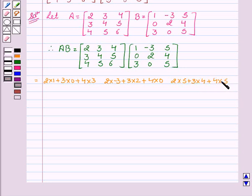Similarly, for the second row, we get 3 into 1 plus 4 into 0 plus 5 into 3. And 3 into minus 3 plus 4 into 2 plus 5 into 0.